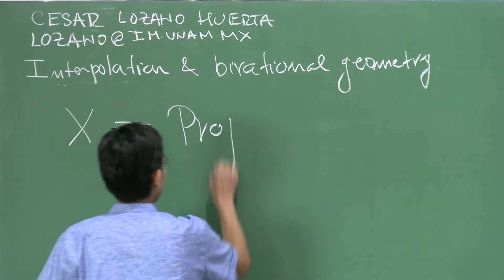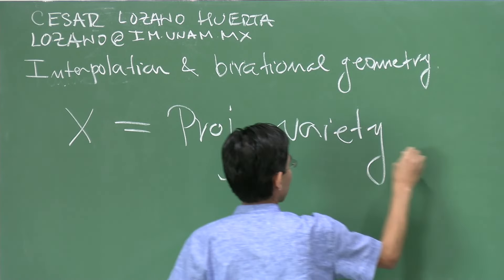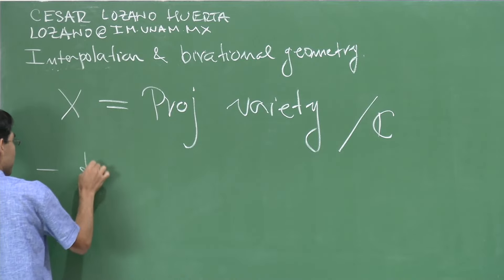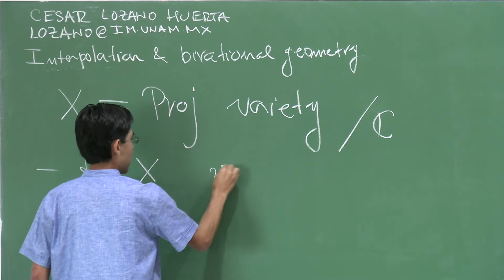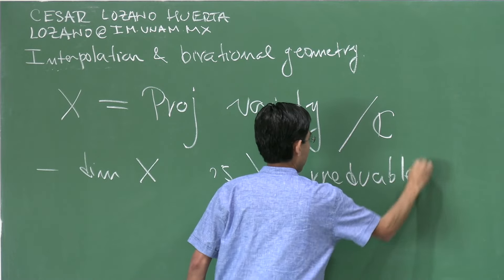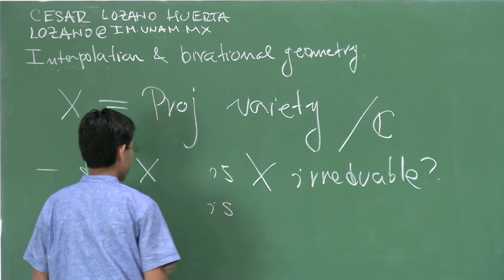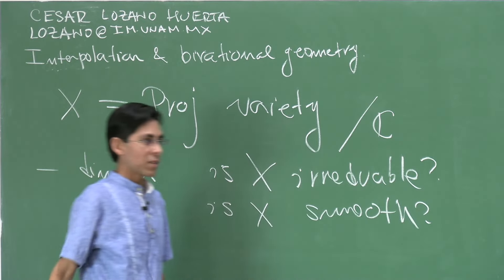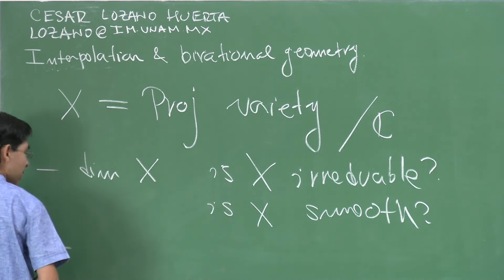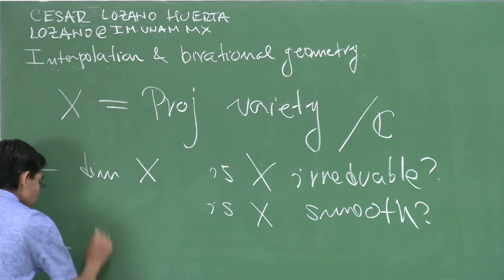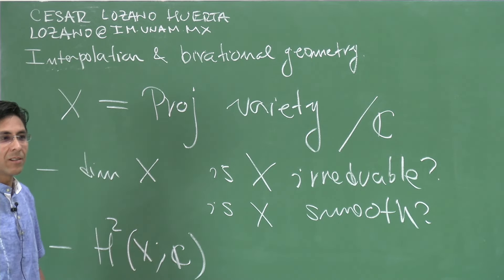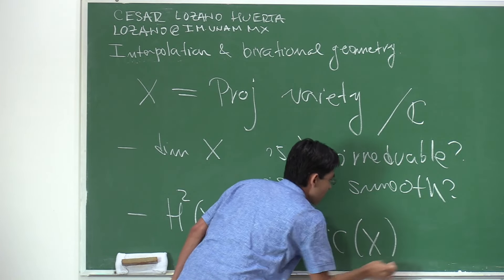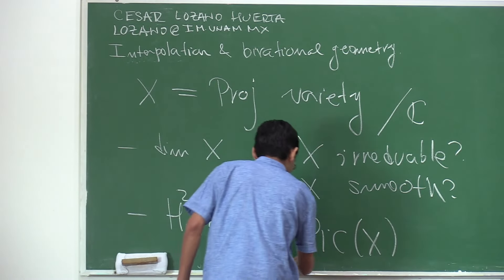So say we start with a projective variety X — everything I'll say holds over the complex numbers. One starts asking questions like: what's the dimension of X? Is X irreducible? If it is irreducible, what's the dimension? Is X smooth? Those are a few of the first questions we can ask. Then if we know these three things, we can start asking more specialized questions: what's the second cohomology over the complex numbers, and among those cohomology classes, what are the algebraic ones?